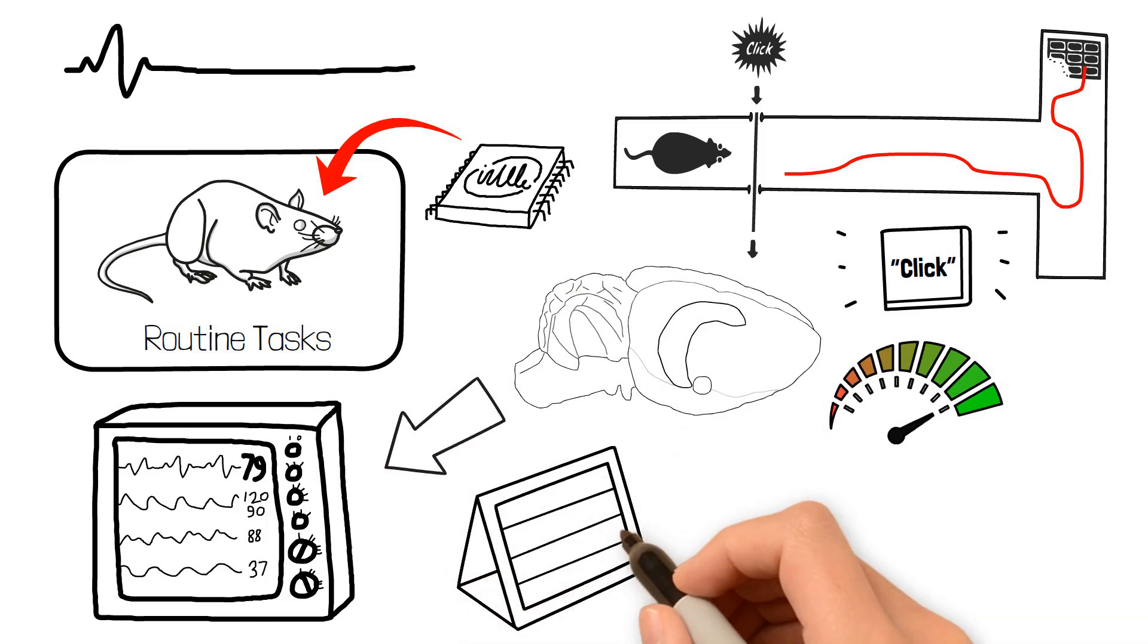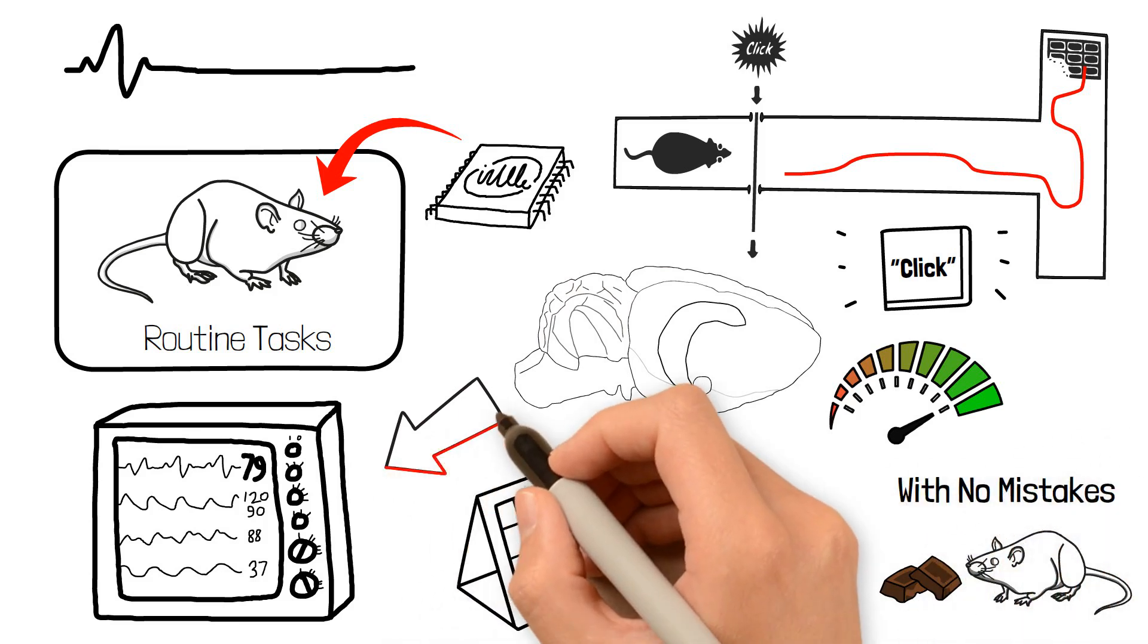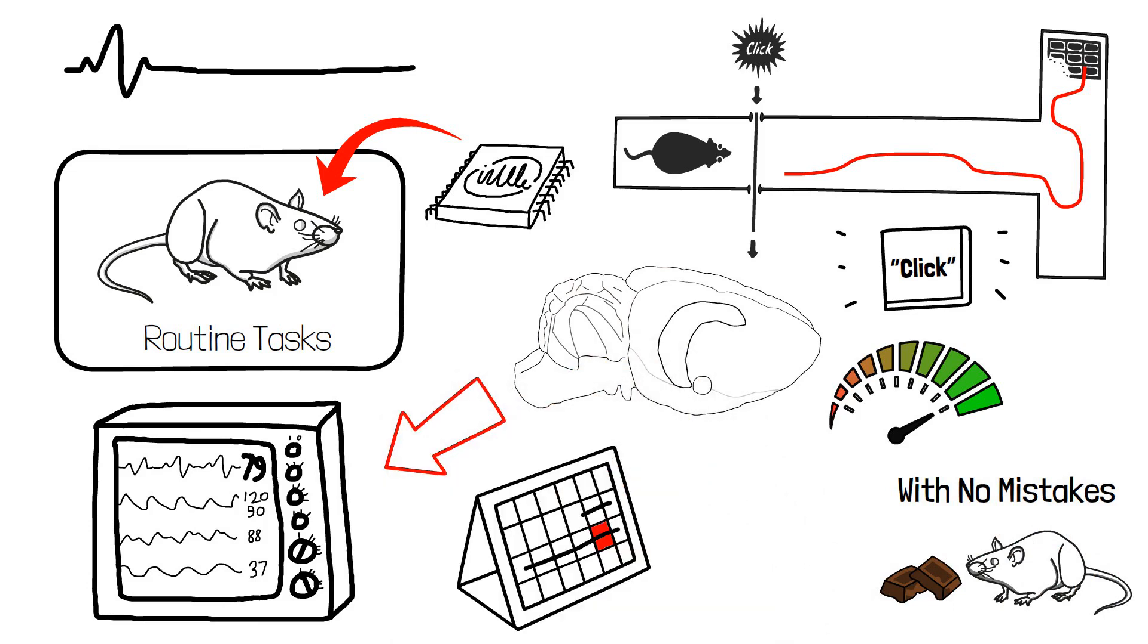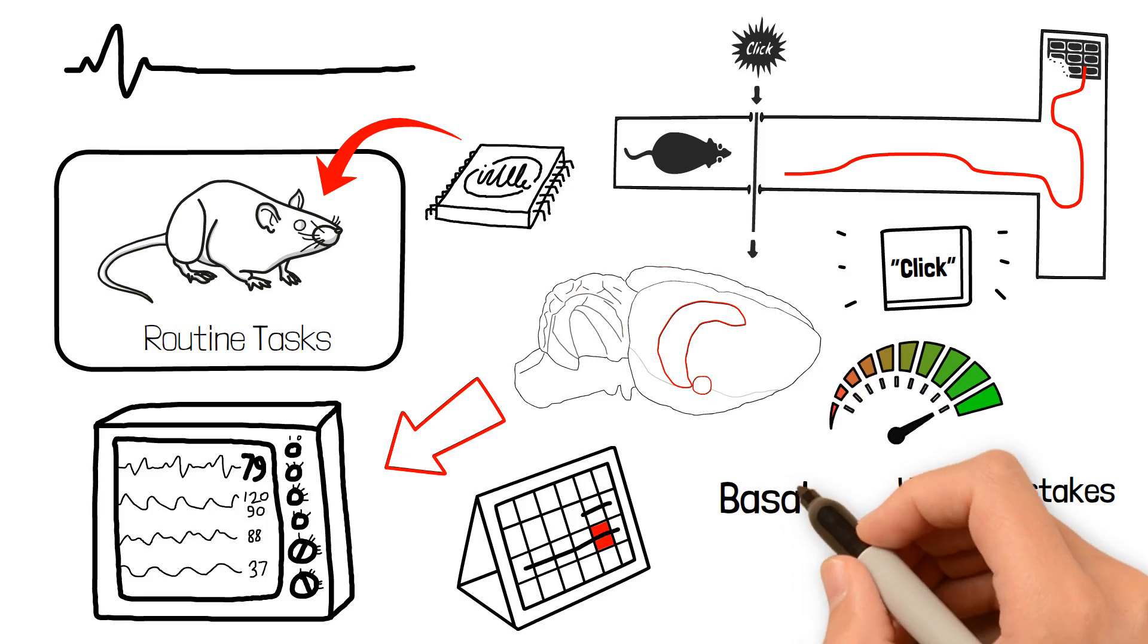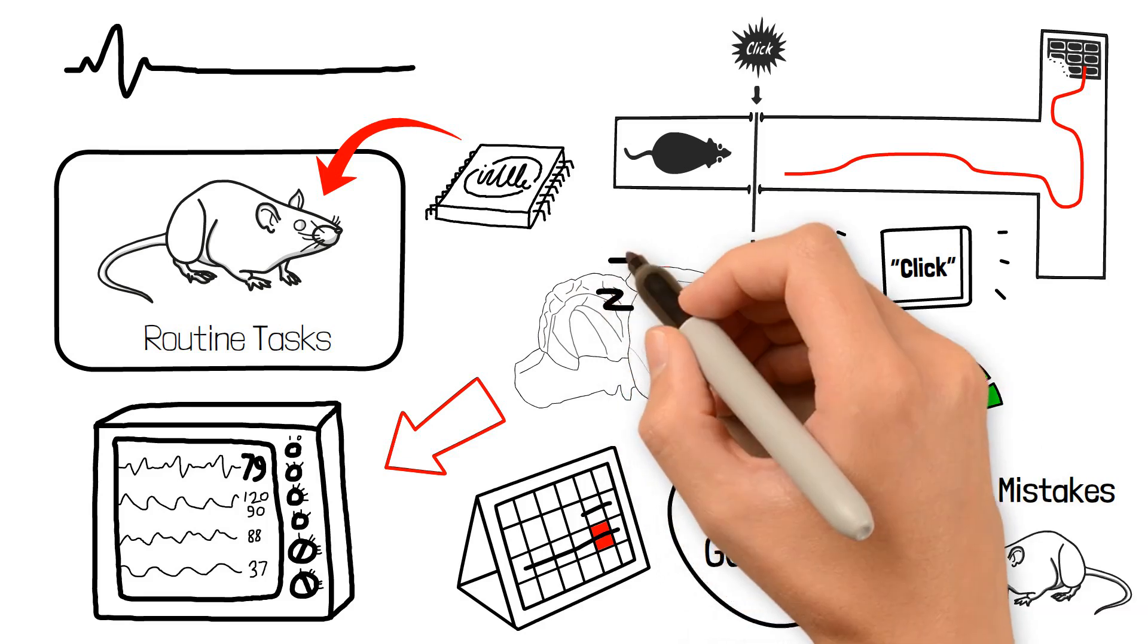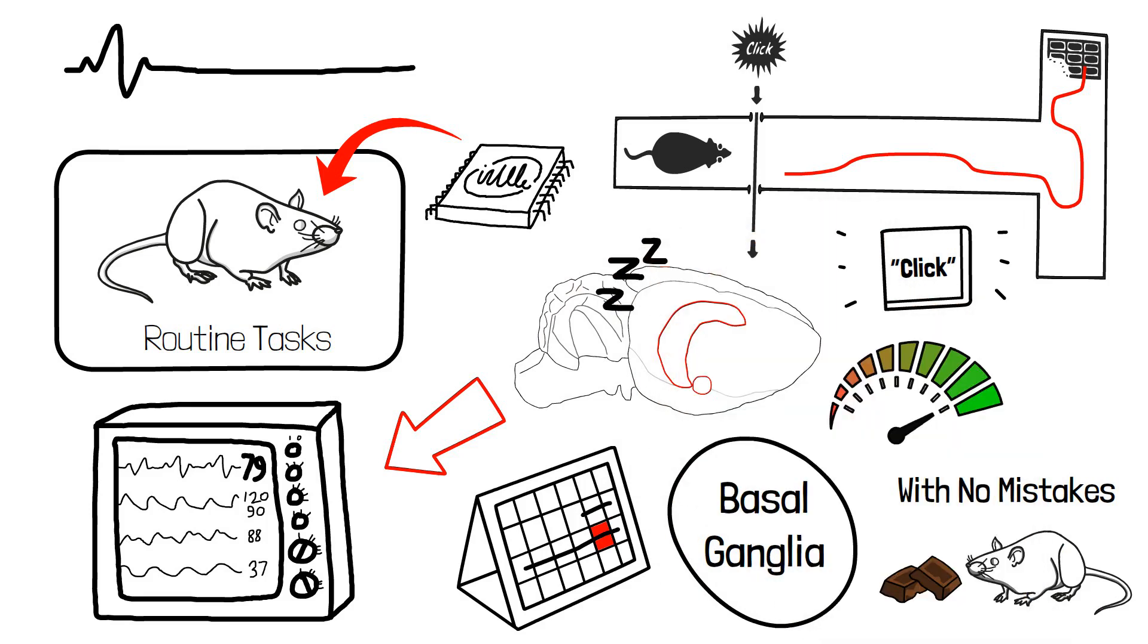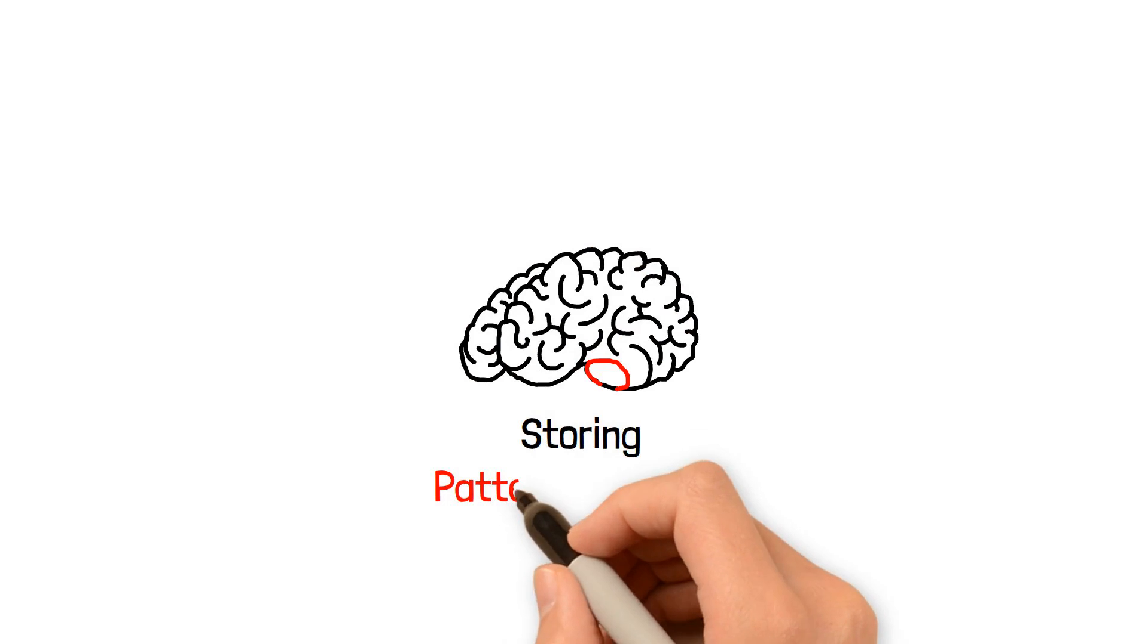They ran the test for a week to see if anything would be different. By that time, it took less time for the rat to find the chocolate and with no mistakes. Then they checked the graph of the brain again, and they saw something amazing. Only the basal ganglia was active. In other words, the basal ganglia took control of the brain while the rest of the brain was asleep. Now scientists know for sure that the basal ganglia are responsible for storing patterns and habits in our brains.